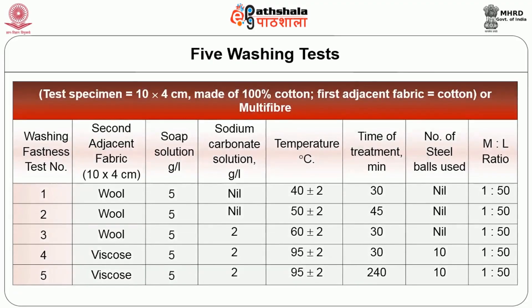There are 5 washing tests prescribed by AATCC. You can conduct the test using either a multi-fiber fabric or a cotton fabric attached to the test specimen. For tests 1 to 3, wool fabric is used, and for tests 4 and 5, the detergent size is changed. Parameters mentioned include material-to-liquid ratio, temperature, rotation time, and sometimes steel balls are added to give abrasion for heavy fabrics. The material-to-liquid ratio to follow is 1:50.